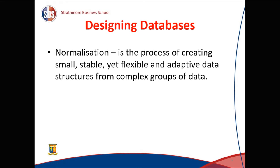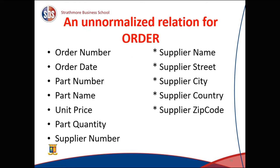In designing a database, it is very important that we normalize it. Normalization is the process of creating small, stable, yet flexible and adaptable data structures from complex groups of data. This is an example of an unnormalized relation for an order — in this table we have twelve attributes, and we can normalize it by dividing them into smaller tables.